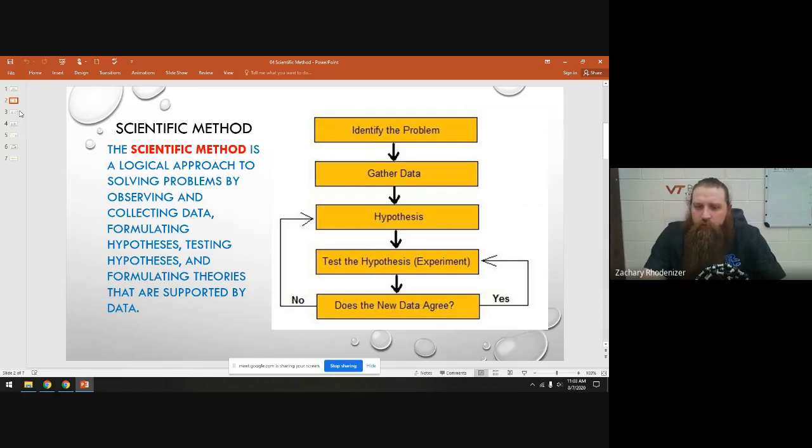Now you can see from this flow chart that if the data does agree, you follow the yes arrow there. You still test the hypothesis again—you should do three to four trials in order to get valid data. If your data doesn't agree, follow the arrow on the left, you go back, rewrite your hypothesis, and then start the tests again.